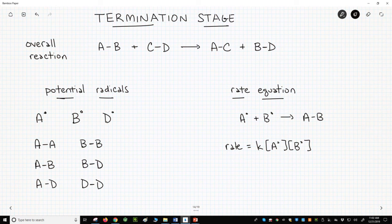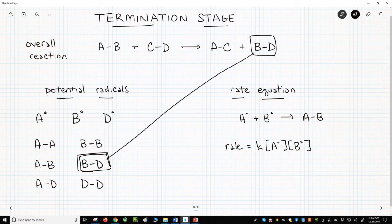One final comment. If you look at one of our products from the termination reaction, it is the same as one of our main reaction products. Is it possible that BD forms primarily through the termination step, not the propagation steps?